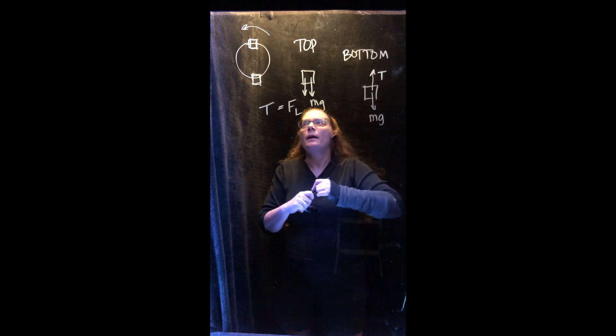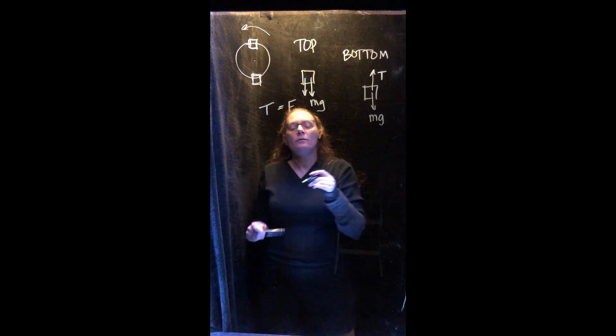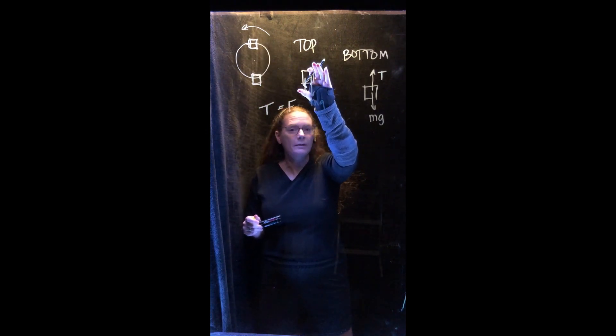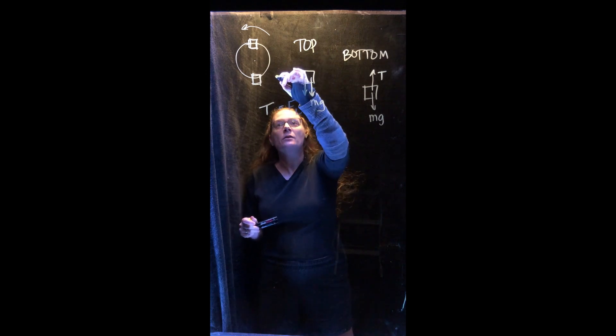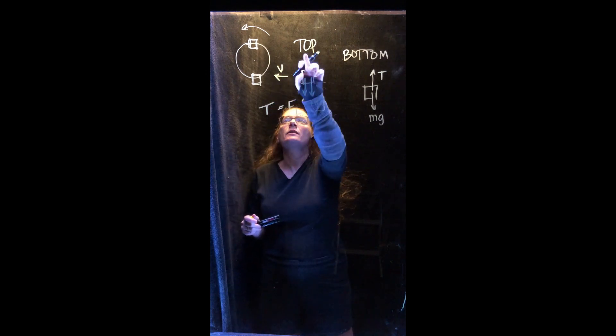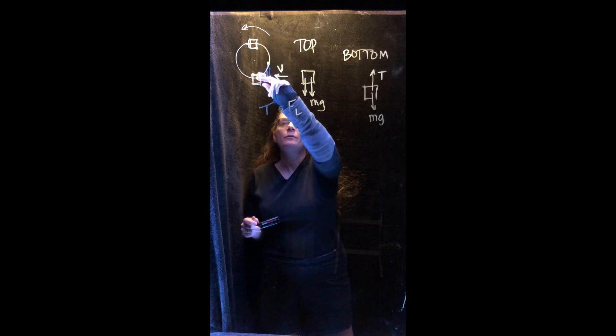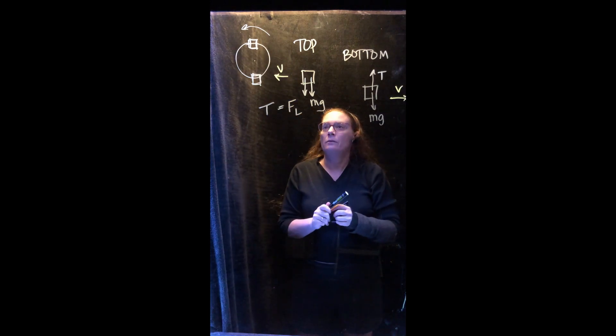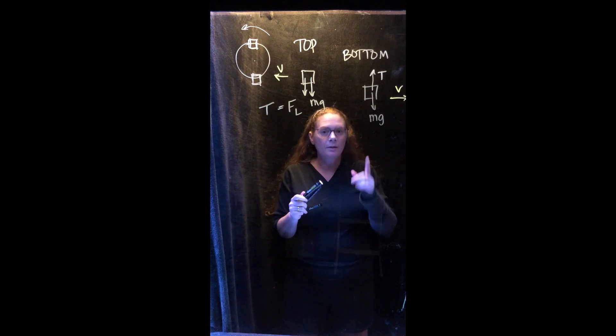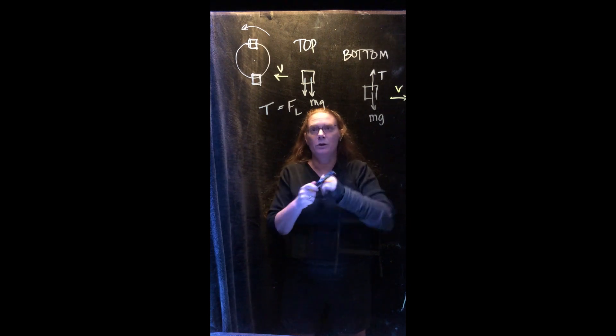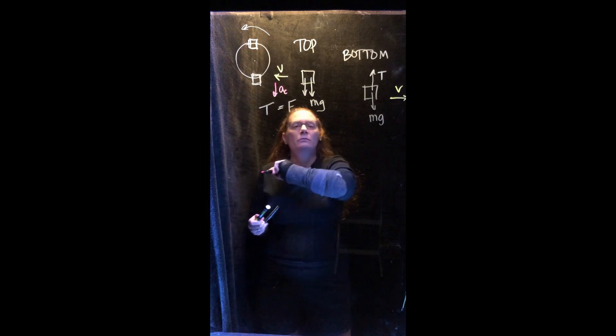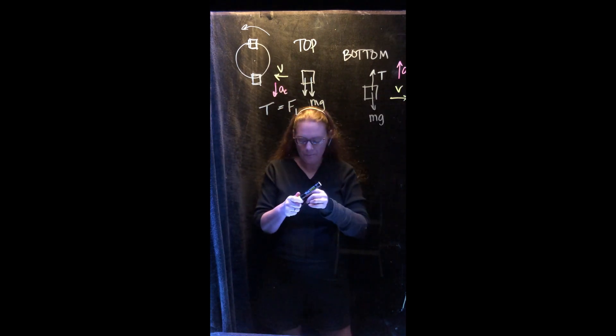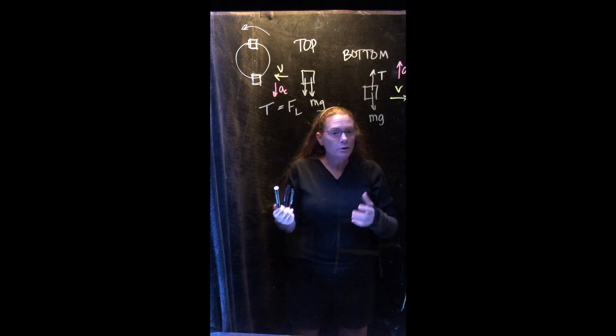So what direction is the velocity? What direction is the acceleration for each of these? At the top, if it's going in this direction, velocity is tangential. Don't put this on your diagram, it's not a force, so we don't put it there. So the velocity at the top is going that way. Velocity at the bottom is going this way. The acceleration at the top, centripetal acceleration always points towards the center of the circle, so centripetal acceleration downwards. Centripetal acceleration here is upwards.